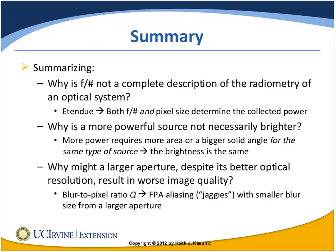To summarize: why is F-number not a complete description of the radiometry of an optical system? Because both pixel size and F-number determine how much power is collected — it's not just the optics. Why is a more powerful source not necessarily brighter? Because the more powerful source, if put into a collimator, will emit into a larger solid angle; or if you look at the source itself, it'll be bigger and emit from a larger area, so its brightness isn't any better.